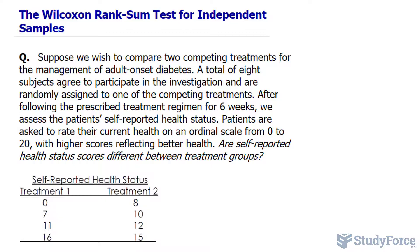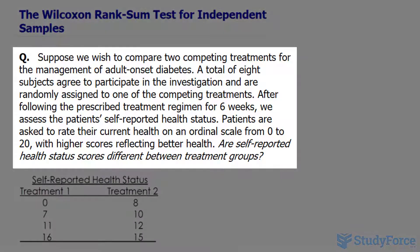Let's go ahead and read the question. Suppose we wish to compare two competing treatments for the management of adult onset diabetes. A total of eight subjects agree to participate in the investigation and are randomly assigned to one of the competing treatments. After following the prescribed treatment regimen for six weeks, we assess the patient's self-reported health status. Patients are asked to rank their current health on an ordinal scale from 0 to 20, with higher scores reflecting better health. Are self-reported health status scores different between treatments?